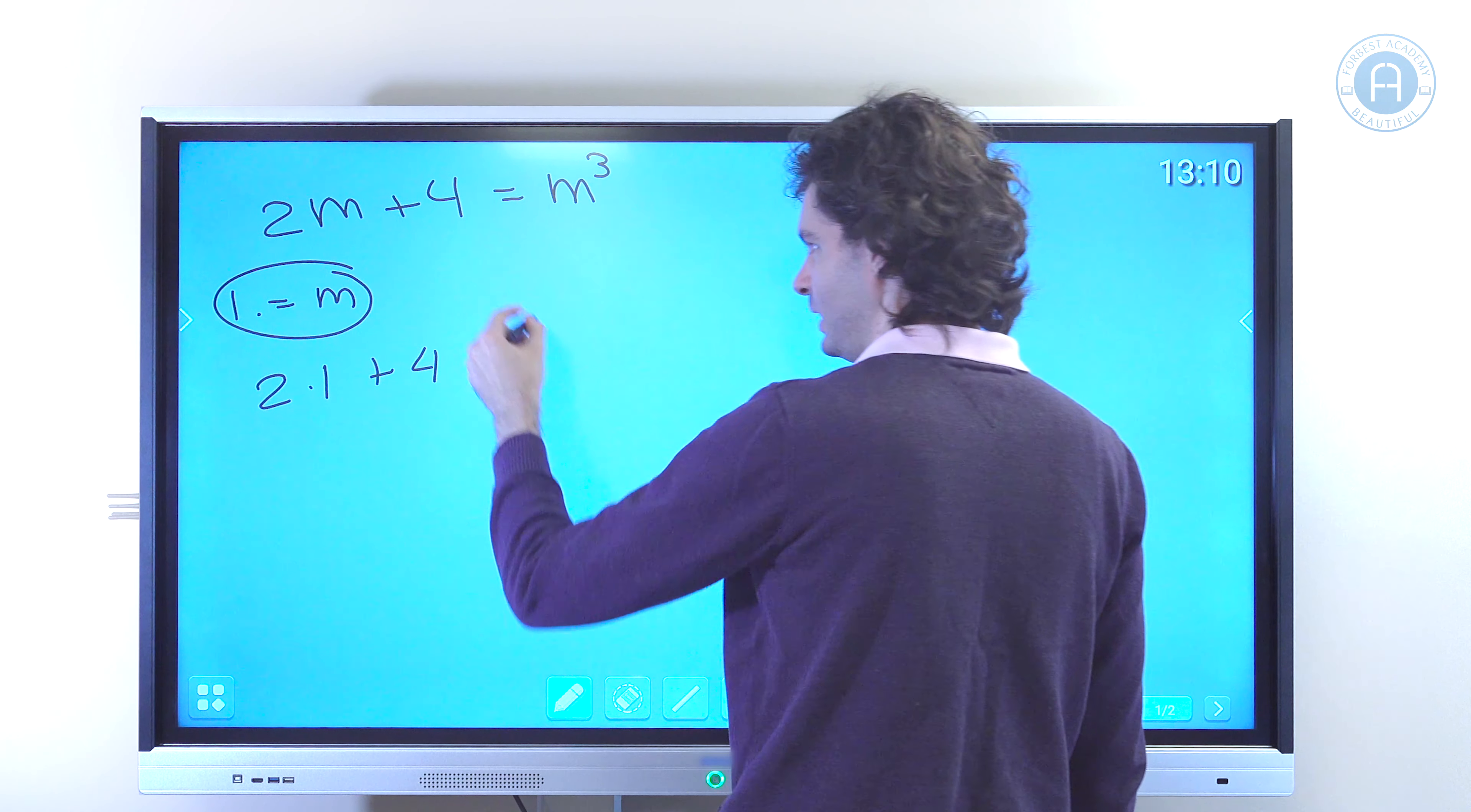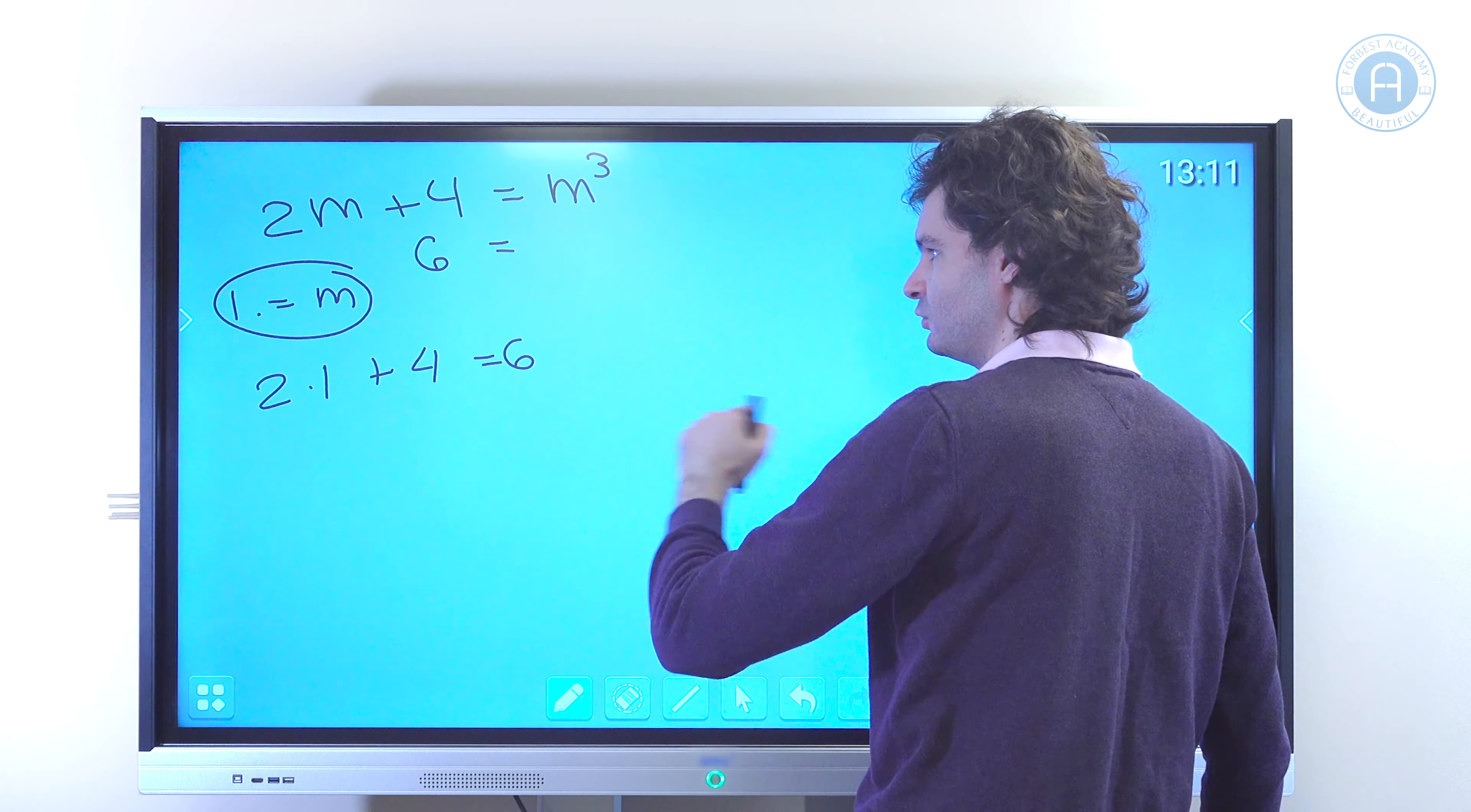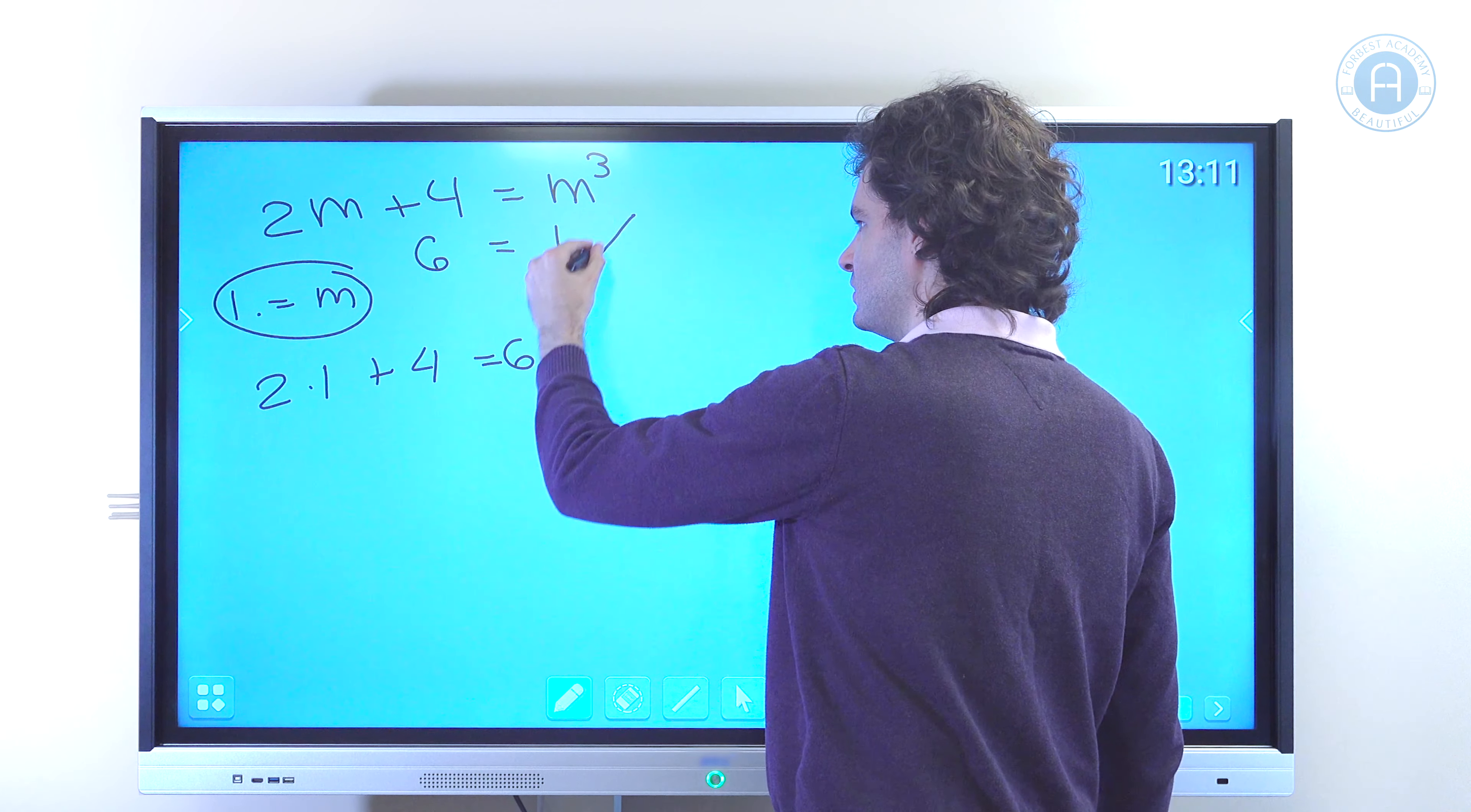So we have 6 on the left hand side, and then on the right hand side we have 1 to the power of 3, which is 1. And 6 is not equal to 1, so this is wrong. So it's not the first choice.